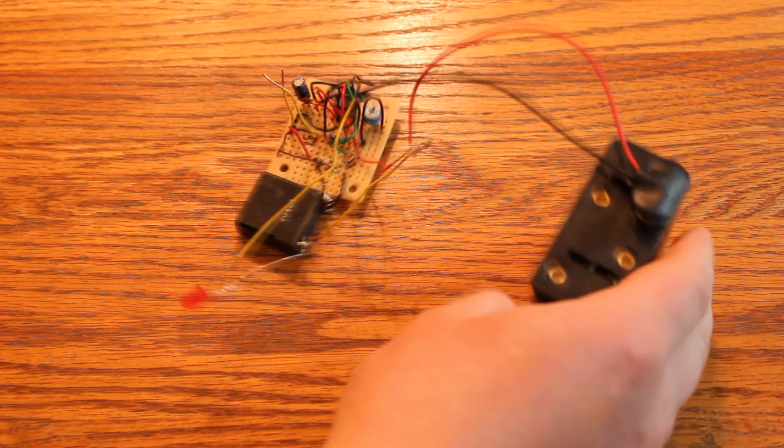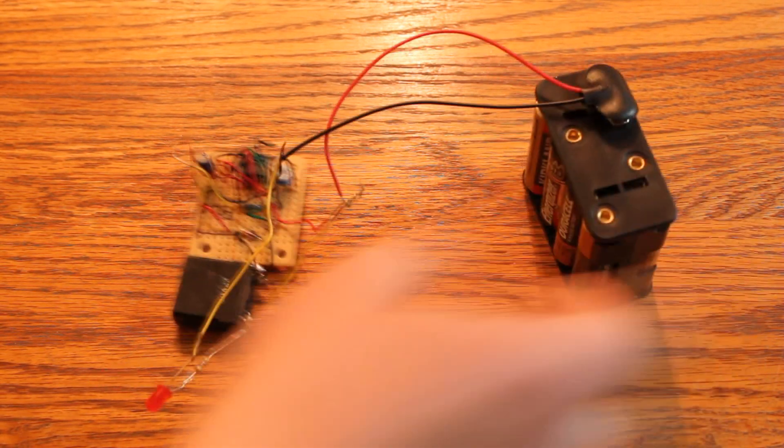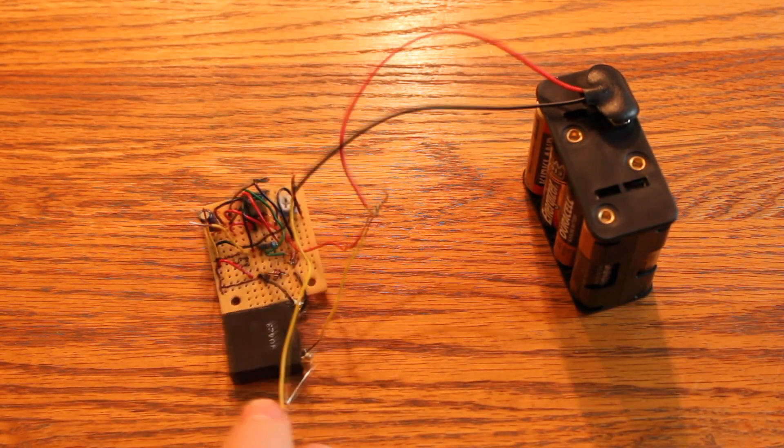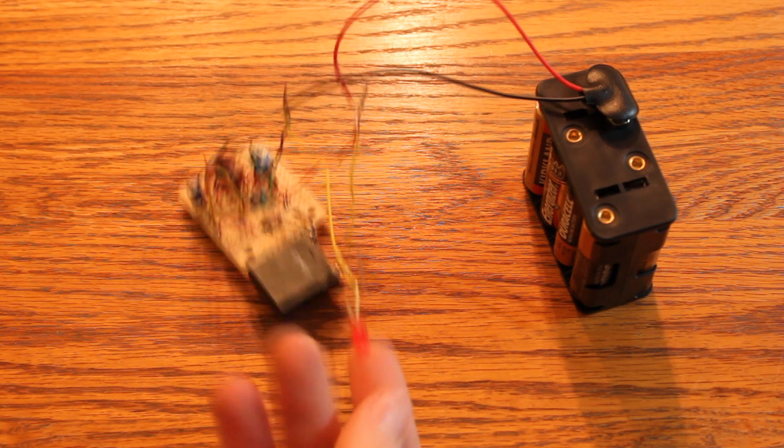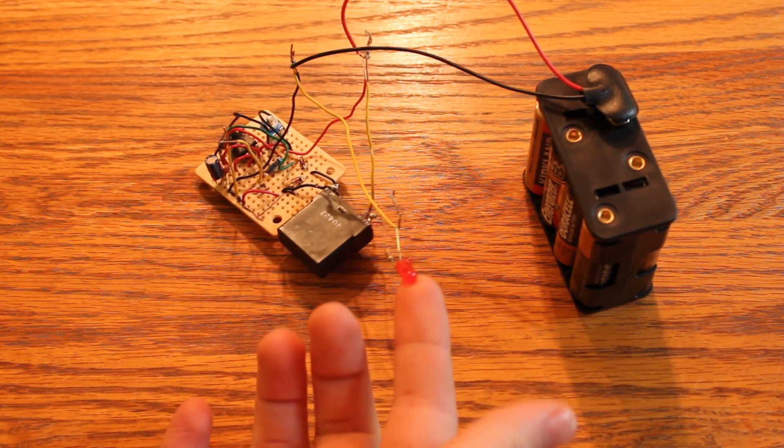The first thing is this battery pack is representing my car battery, the 12 volts. This LED, the red LED, is representing my car starter getting power.